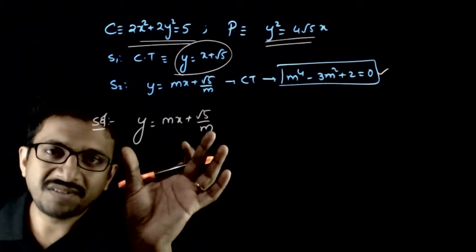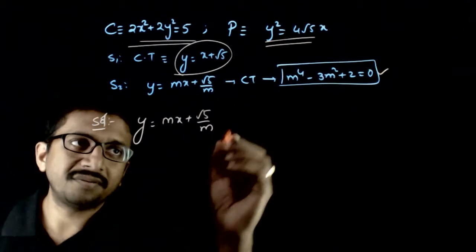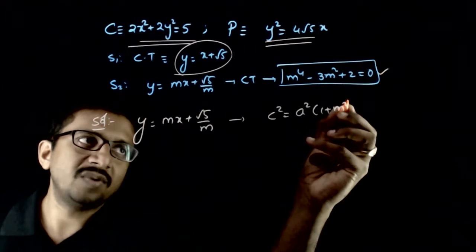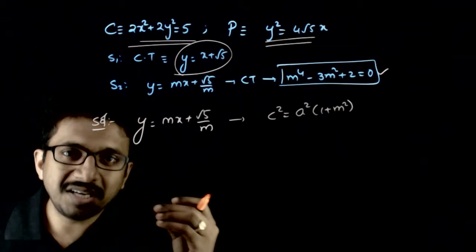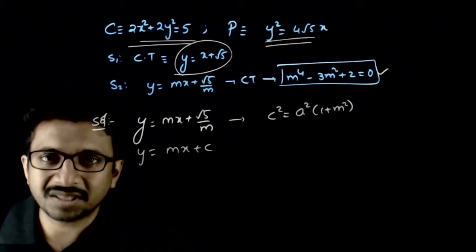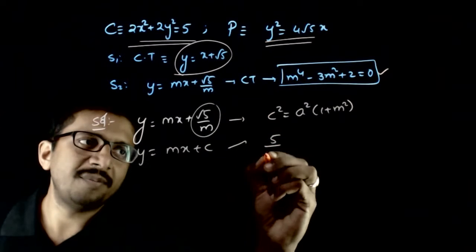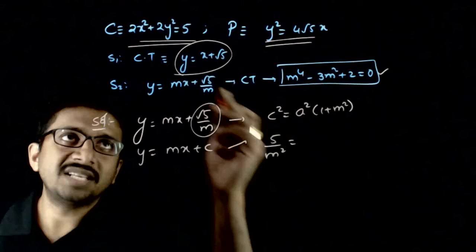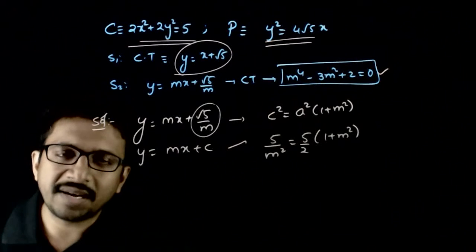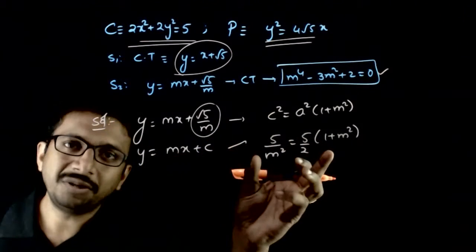Now if this tangent is also a tangent to the circle 2x² + 2y² = 5, then the condition c² = a²(1 + m²) must hold. Here c = √5/m, so c² = 5/m². The radius squared a² = 5/2, giving us 5/m² = (5/2)(1 + m²).